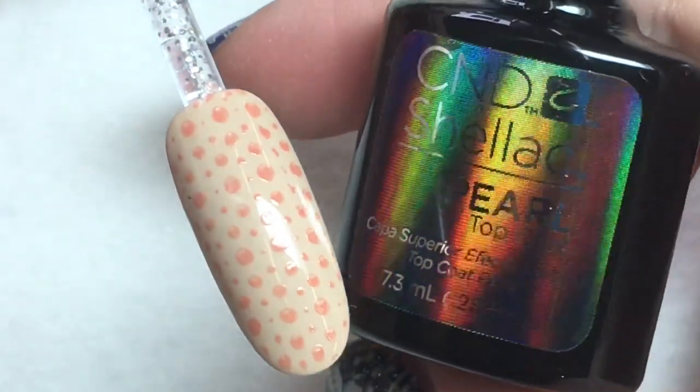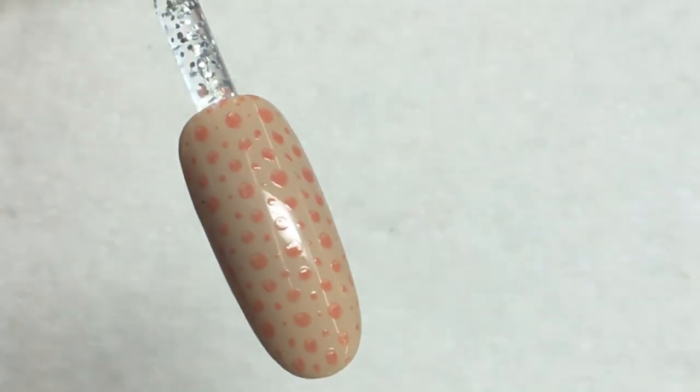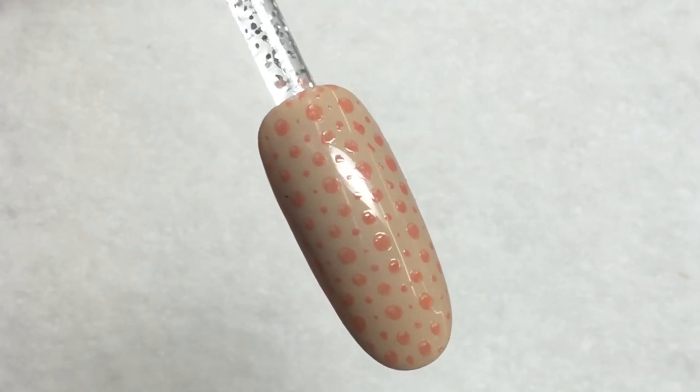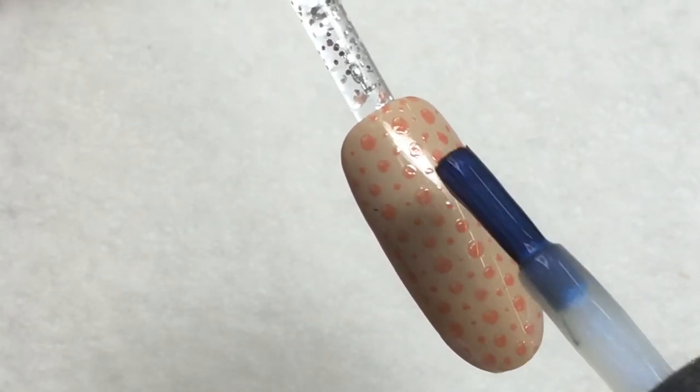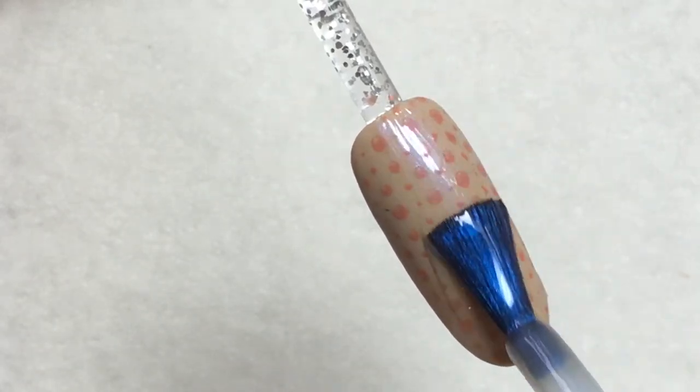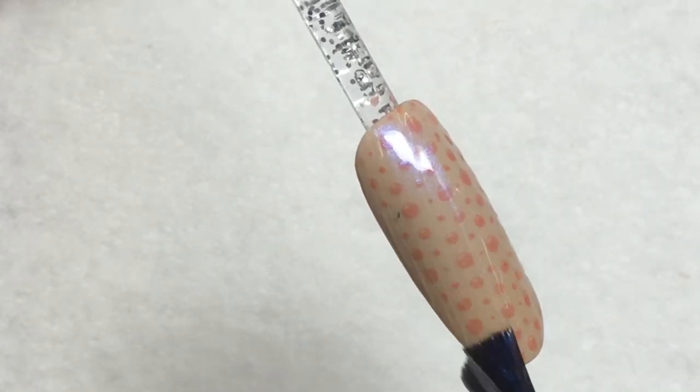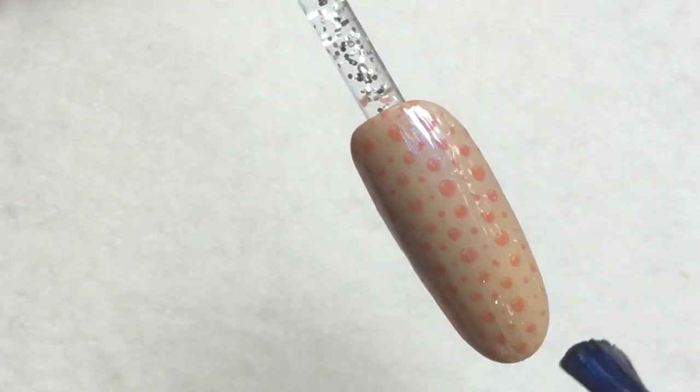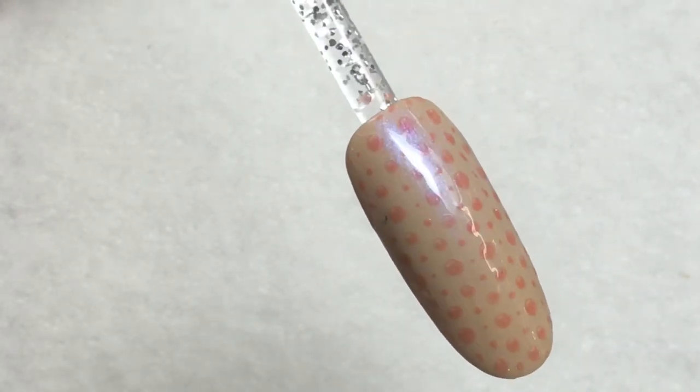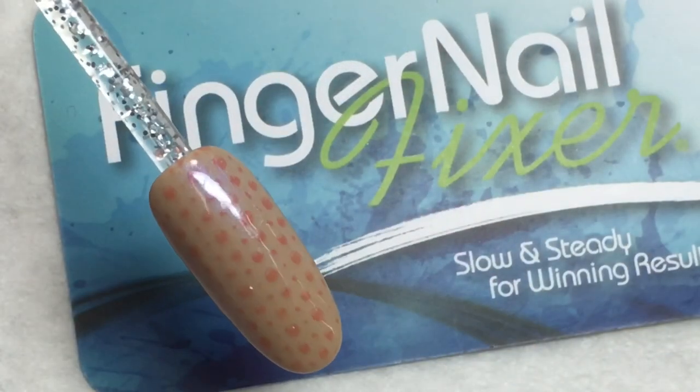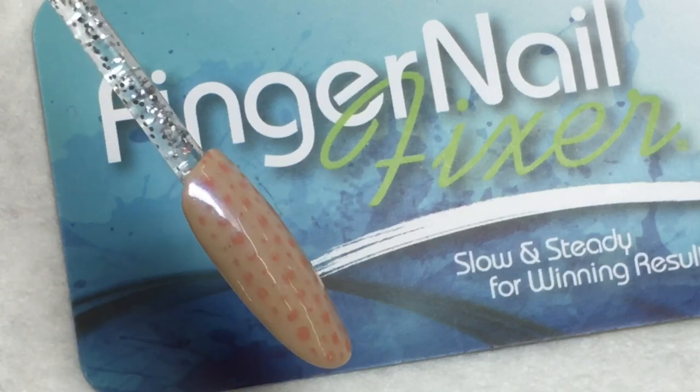Once you have cured your stamped design or let it dry, depending on the medium that you're using, apply a top coat. In this case, I'm applying a pearlescent top coat so that it gives the design a little bit of shimmer and softens the stamp. I hope this gives you an idea for your more conservative clients on how to talk them into trying a nail design.